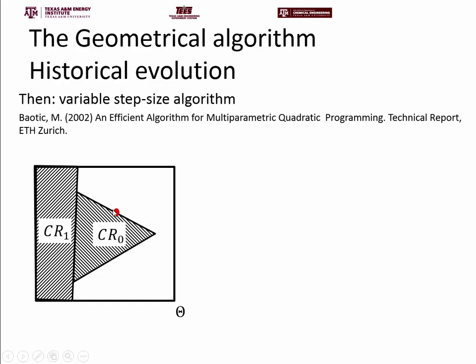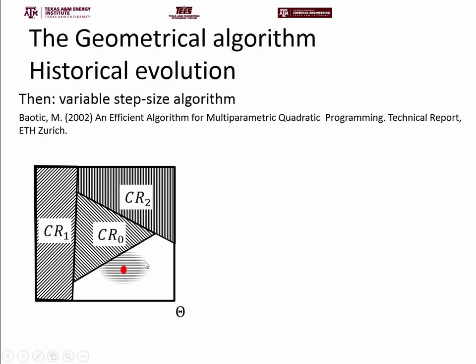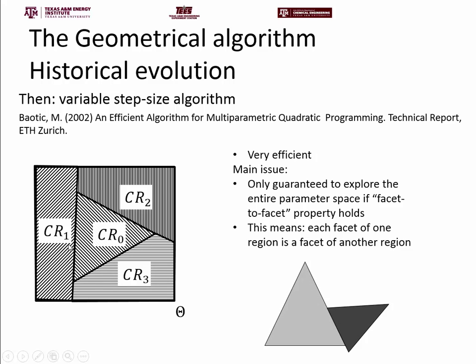We then locate another point on the next facet, step out again, get another region, and so on — this is how we explore the full parameter space. This is a very efficient algorithm, implemented in the POP toolbox and also in the MPT toolbox. To date, it is the most efficient geometrical algorithm that exists.